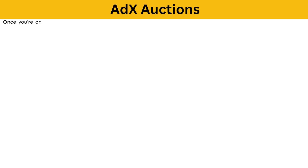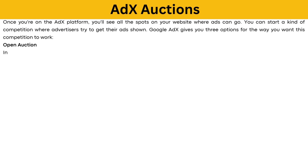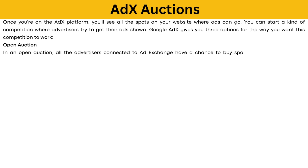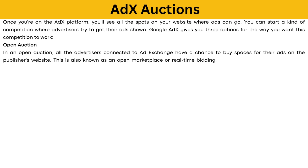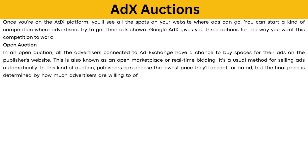AdX Auctions: Once you're on the AdX platform, you'll see all the spots on your website where ads can go. You can start a kind of competition where advertisers try to get their ads shown. Google AdX gives you three options for how you want this competition to work. In an Open Auction, all the advertisers connected to AdExchange get a chance to buy spaces for their ads on the publisher's website — also known as an open marketplace or real-time bidding. Publishers can choose the lowest price they'll accept for an ad, but the final price is determined by how much advertisers are willing to offer. However, it's not guaranteed that ads will always be available.